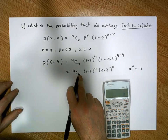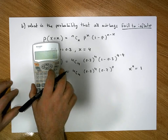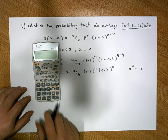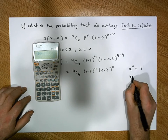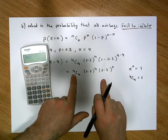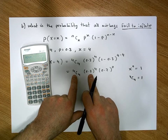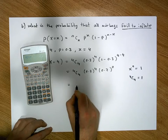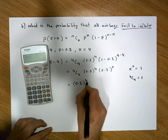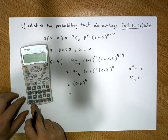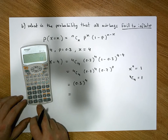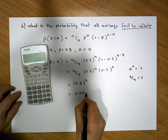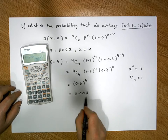Recall that any number x raised to the power of 0 is always equal to 1. Also, 4C4 — how many ways can you select four objects from four objects? There's only one way. On the calculator: 4, second function, NCR, 4 gives us 1. So 4C4 equals 1. This means 1 times 0.3 to the 4 times 1, which reduces to 0.3 raised to the power of 4. On the calculator, 0.3 to the power of 4 gives us 0.008.